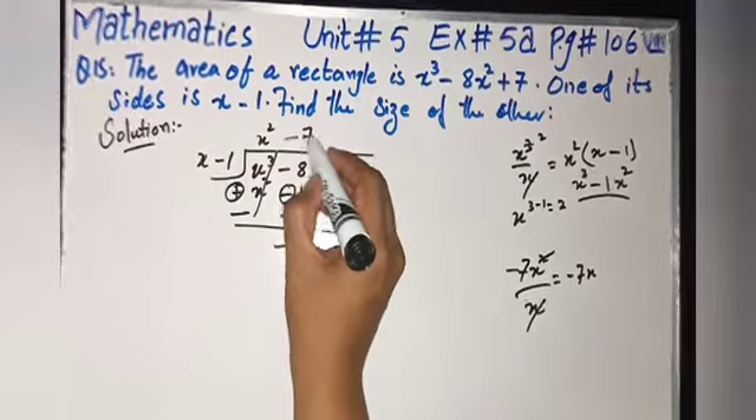7x² upon x, cancel it, minus 7x is left. Minus 7x would be the answer. Multiply by x - 1: minus plus minus 7x², minus minus plus 7x.